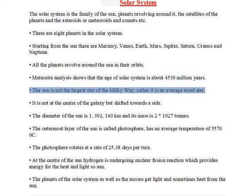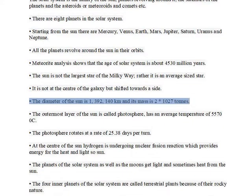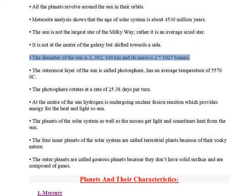The Sun is not the largest star of the Milky Way; rather it is an average-sized star. It is not at the center of the galaxy but shifted towards a side. The diameter of the Sun is 1,392,140 kilometers and its mass is 2×10²⁷ tons.